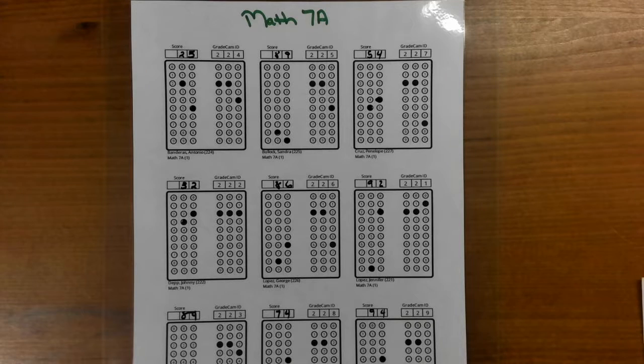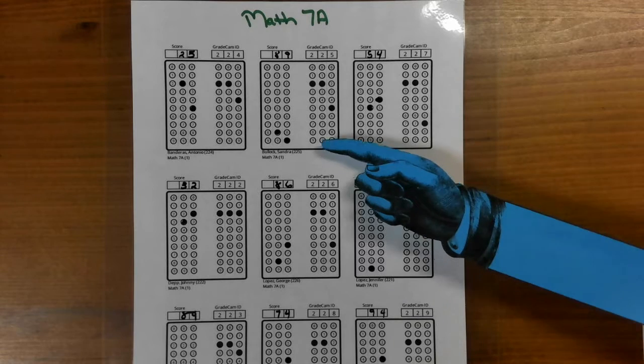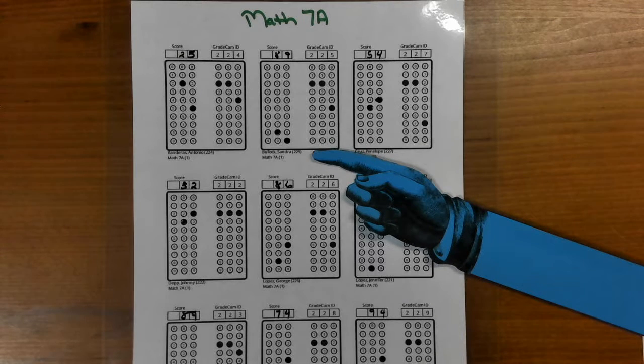Here's a sheet of pre-filled class scans altogether for the scored forms. You'll notice on each one that the student name is listed right below the score and the GradeCam ID is already filled in.